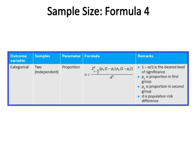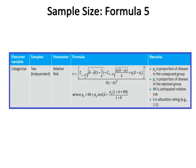Sample size formula four: the outcome variable is categorical, the samples are two of independent nature, and the parameter is proportion. The formula is given in the above table, where (1 - α/2) is the desired level of significance, P1 is the proportion in the first group, P2 is the proportion in the second group, and delta is the population risk difference.